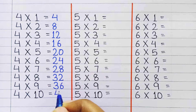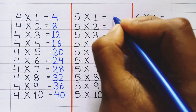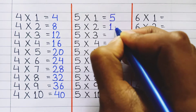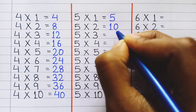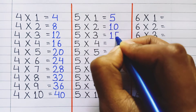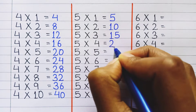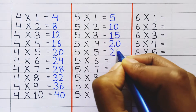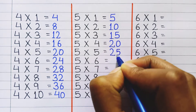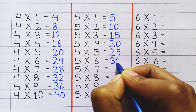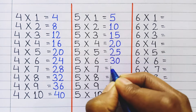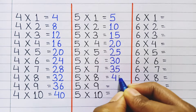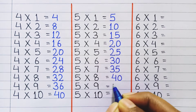4 ten's a 40. Table of 5: 5 one's a 5, 5 two's a 10, 5 three's a 15, 5 four's a 20, 5 five's a 25, 5 six's a 30, 5 seven's a 35, 5 eight's a 40.